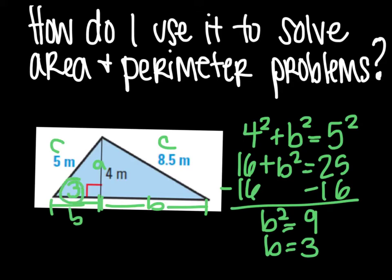So the length right here is 3, which then means that our perimeter for the small triangle would be 5 plus 3 plus 4, which would be 12.